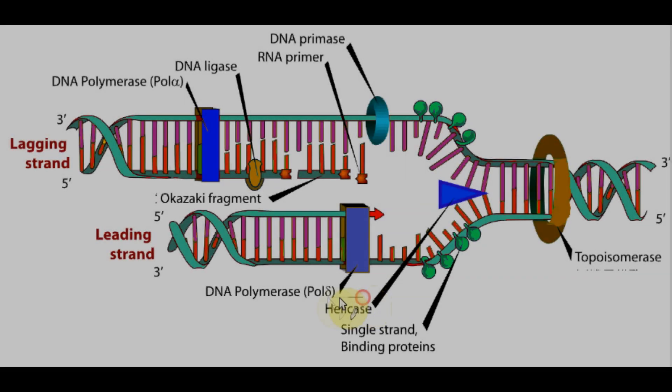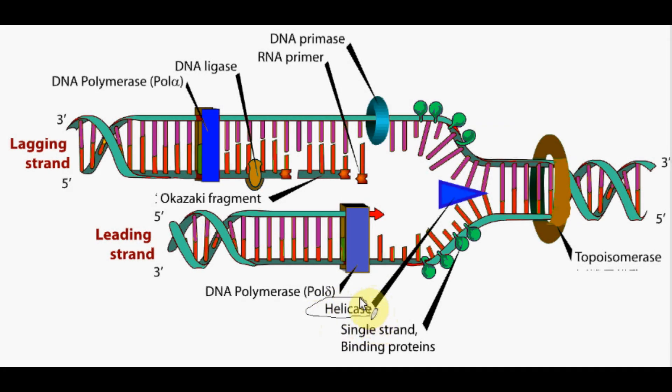When DNA replicates, an enzyme called helicase unwinds the two strands. The single strand protein keeps the DNA in place as the helicase catalyzes the hydrogen bonds holding the nitrogenous bases together. The DNA polymerase adds new nucleotides to each strand.